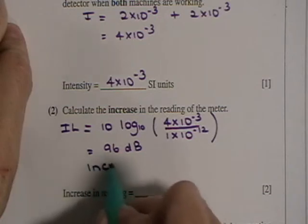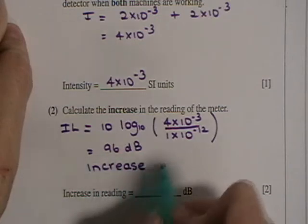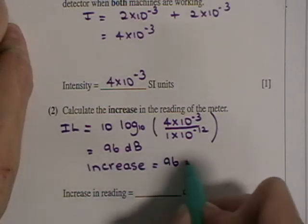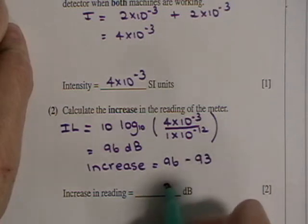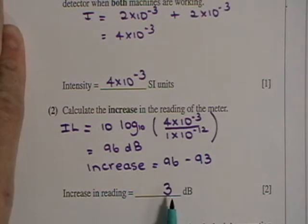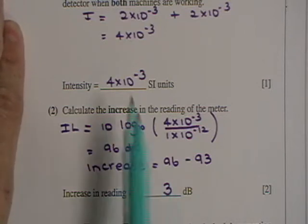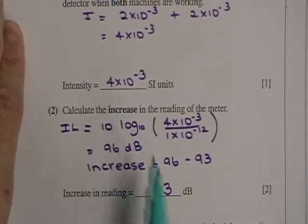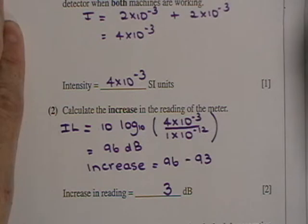And therefore the increase is 96 minus 93, which gives you 3 of course. So even though the intensity of sound is doubled, the increase in the reading has only gone up by 3 decibels. And that's why our ear responds to a logarithmic scale and not an intensity scale. Because that's double the intensity of sound, and yet the number of decibels hasn't doubled. And that's because it's a log scale.